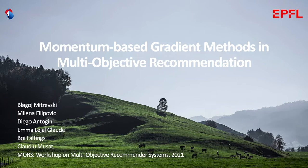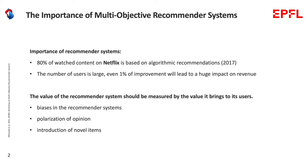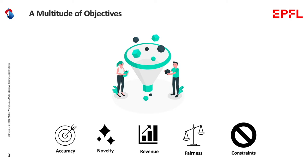Hello, my name is Blagoj Mitrovski, co-author of this paper: Momentum-Based Gradient Methods in Multi-Objective Recommendations. Why are recommender systems important? 80 percent of watch content on Netflix is based on algorithmic recommendations, and the number of users is large, so even one percent improvement leads to huge revenue impact. But looking at recommenders only from a business perspective is a downside — their value should be measured by the value they bring users, also considering biases, polarization of opinion, and introduction of novel items.